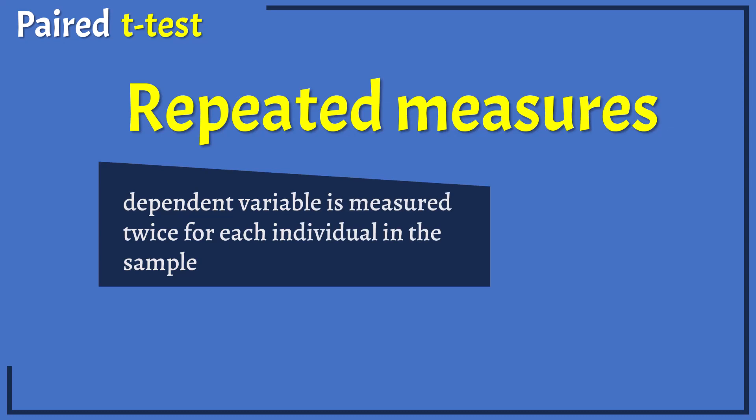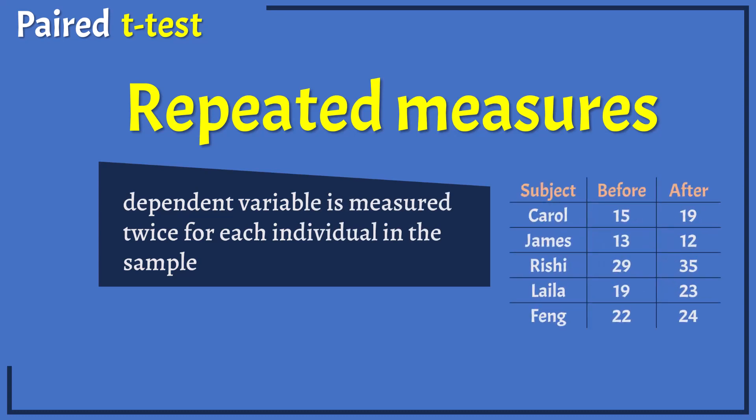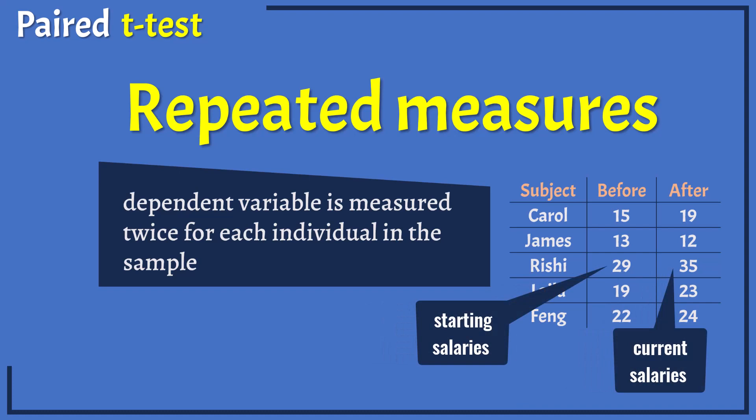A common example is when measurements are taken before and after an intervention. For example, it could be used to determine if there is a statistically significant difference between starting salaries and current salaries of employees in a company.